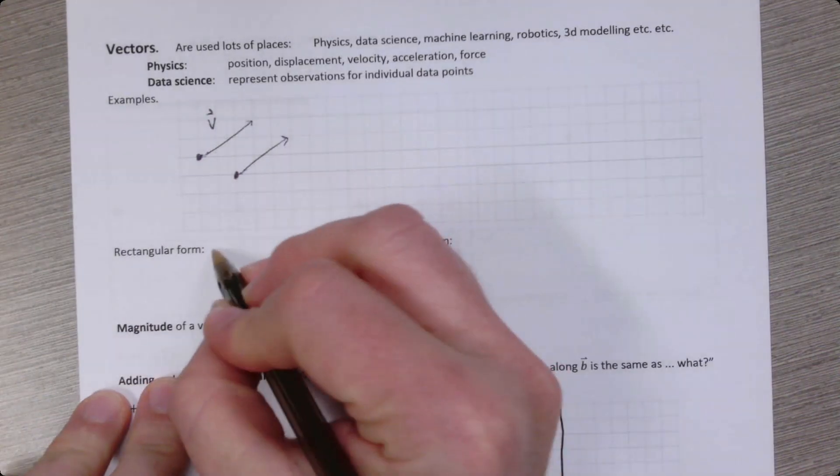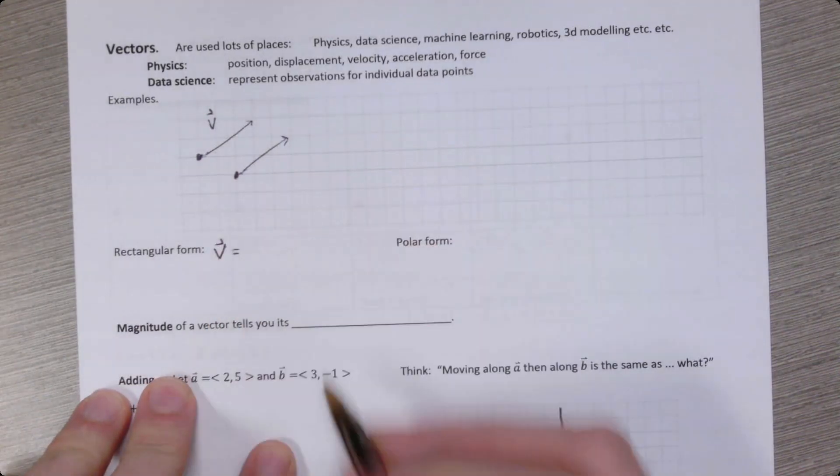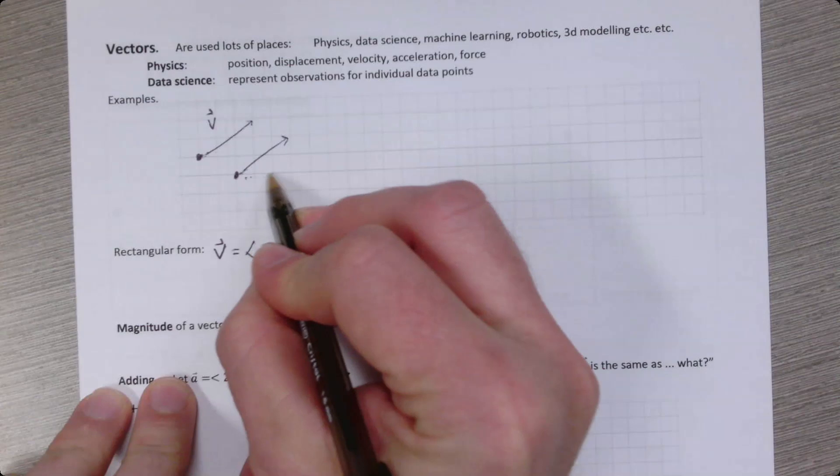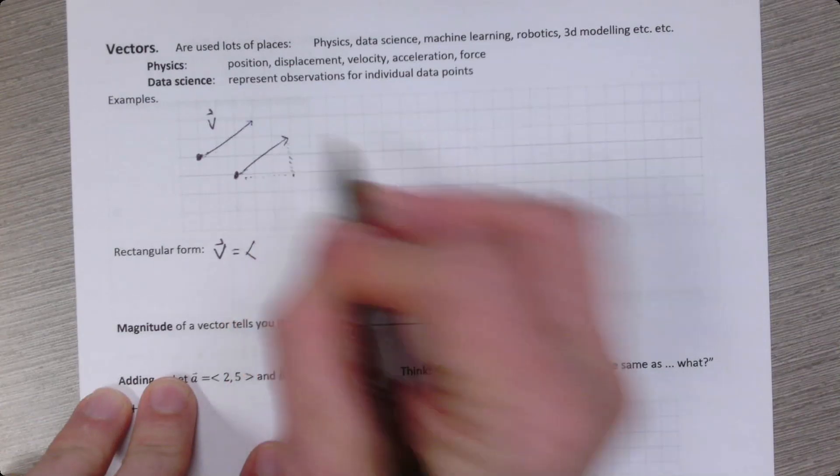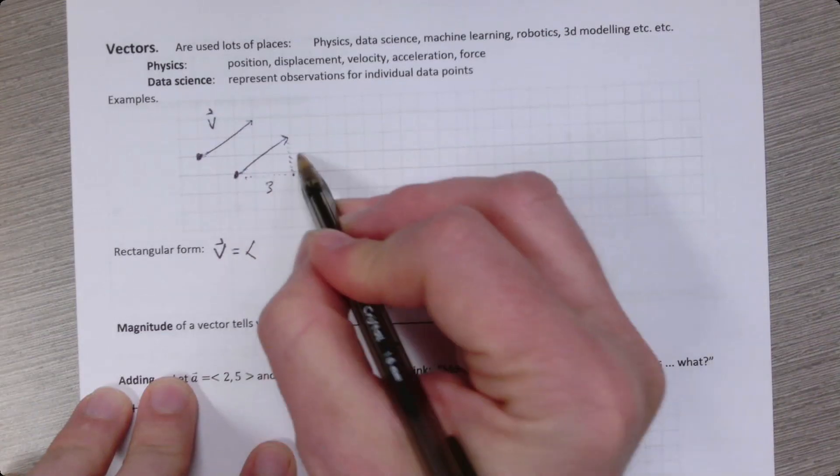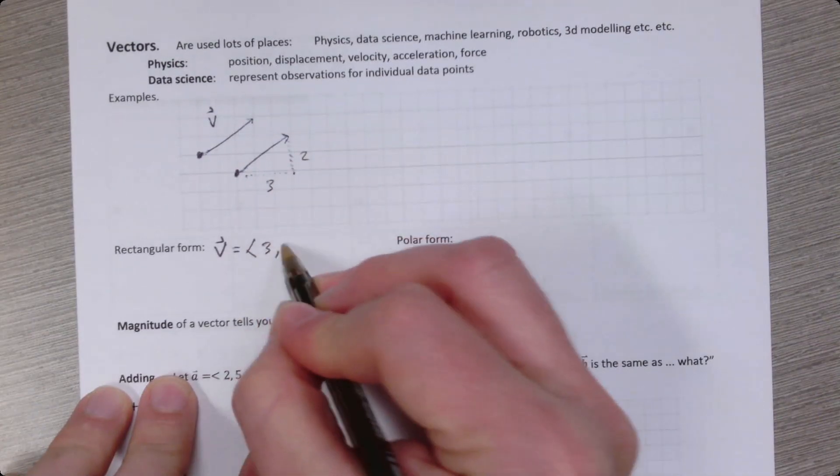So if you wanted to notate a vector in rectangular form, you could use triangle brackets and describe how far over and how far up do you have to go to get from the start to the end of the vector. So here I'm going over three and up two, and you would notate it this way.